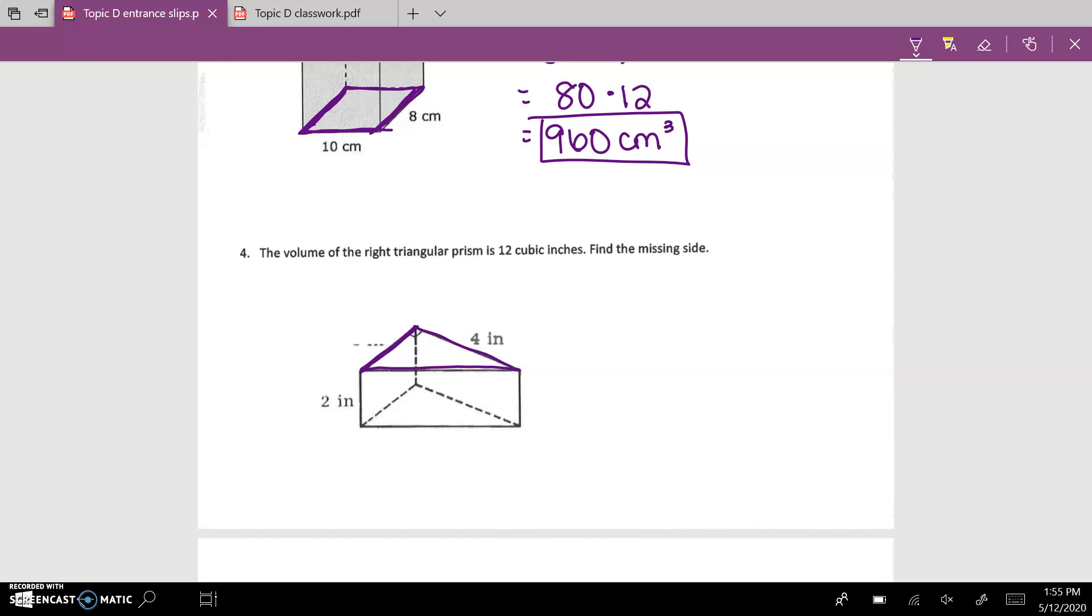The base in this case is this triangle. I'm going to write out the formula first. We have volume equals the area of the base, which is base times height divided by 2, times the height of the shape. We know that the volume is 12, the base of the triangle is 4, but we don't know the height of the triangle.